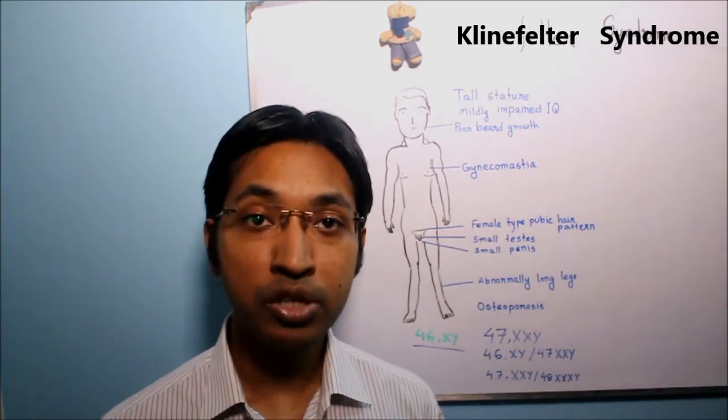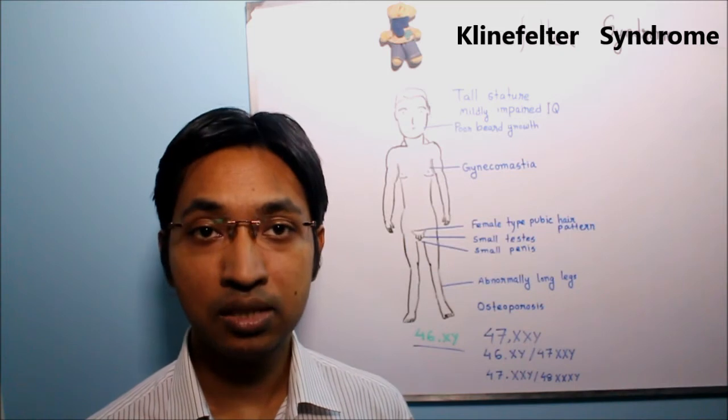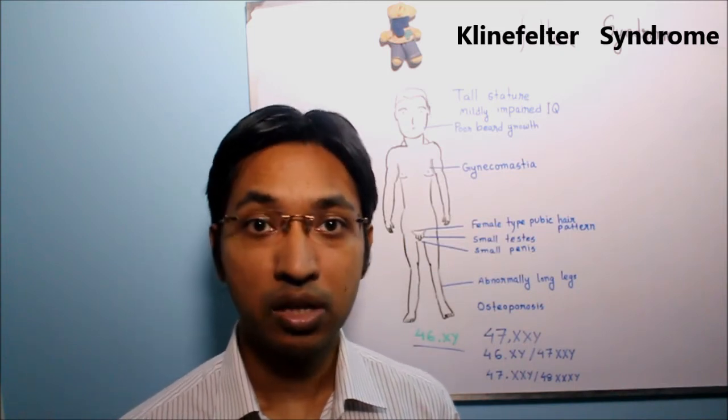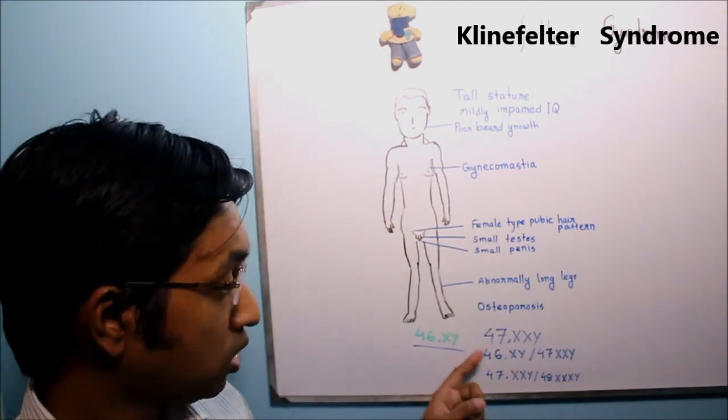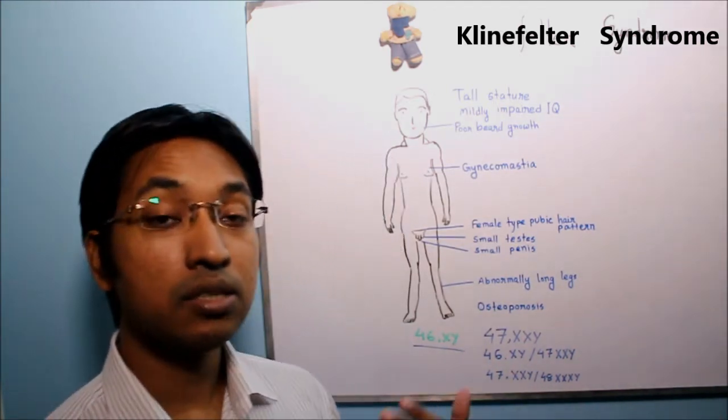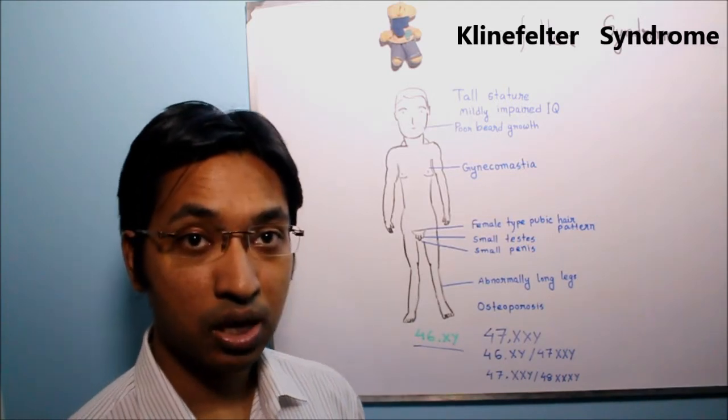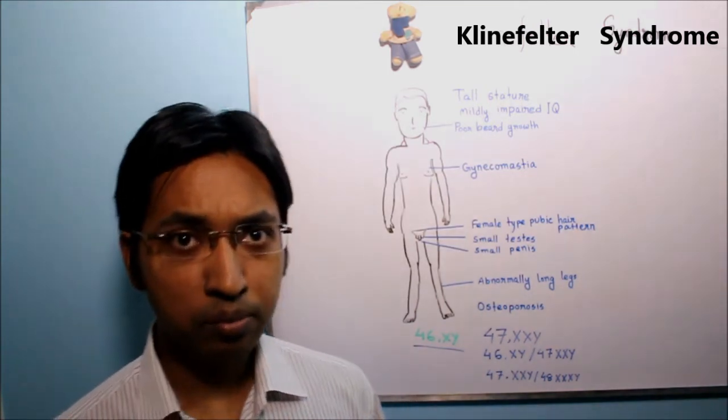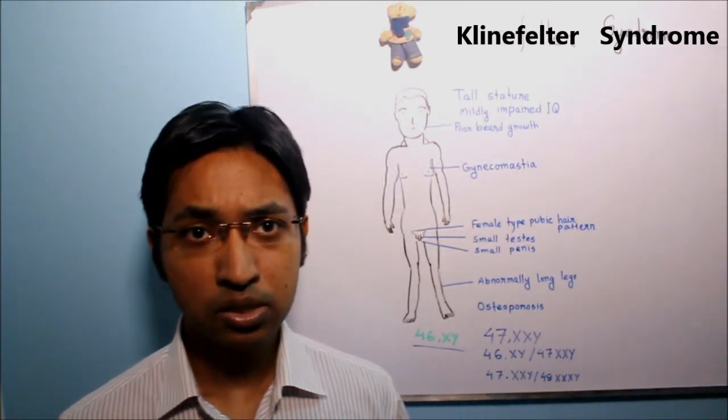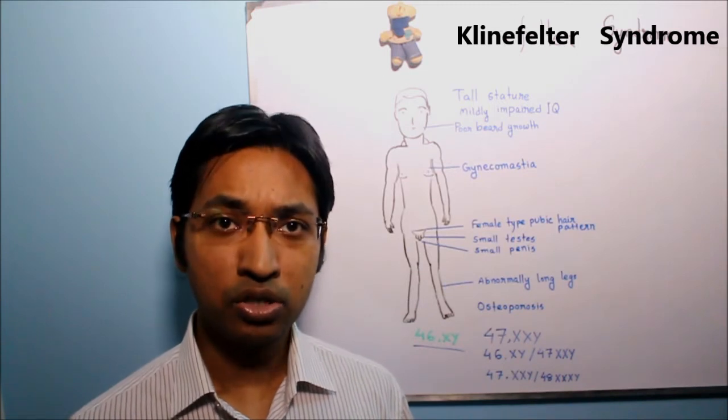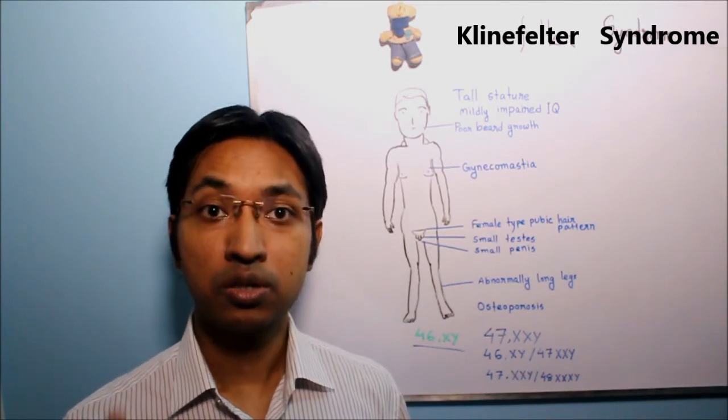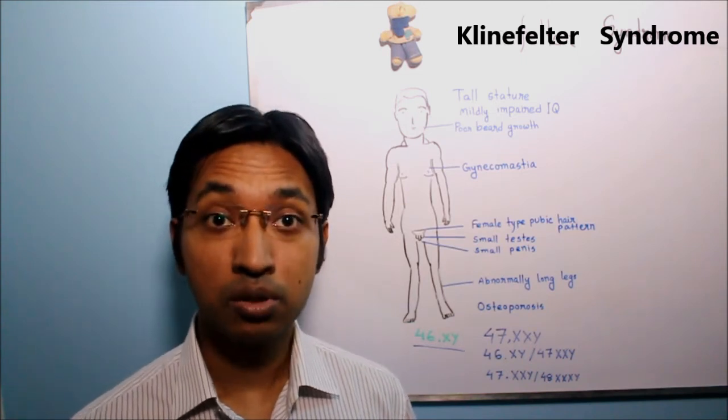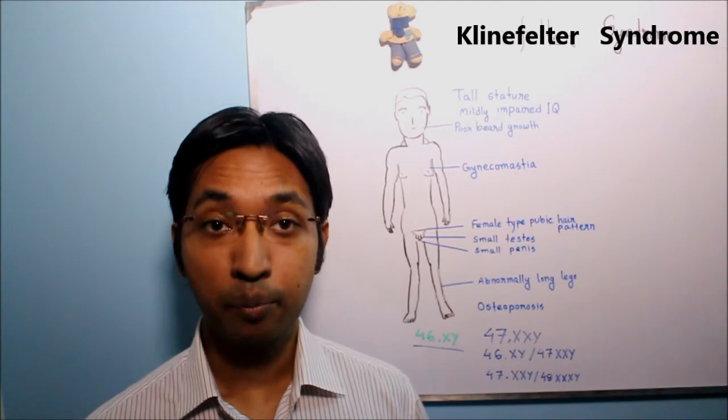Recall from the previous video of this series we had seen that in majority of the cases of Klinefelter syndrome the karyotype will be 47,XXY and in some other cases the karyotype will have mosaic patterns. Now always remember most of the cases of Klinefelter syndrome are usually diagnosed during puberty because that is the time when noticeable clinical features begin to appear.